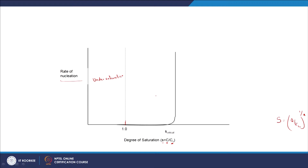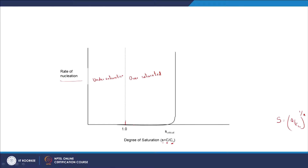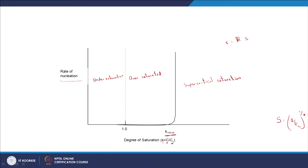Even when S is greater than 1 — oversaturated, C greater than Cs — you still see the solution does not favor nucleation in this region. Only when you reach the supercritical saturation, S critical, do you see a rapid increase, almost like a switch turning on. That is because the order in R = K(S−1)^M is relatively high — so once conditions are favorable, nucleation takes off.